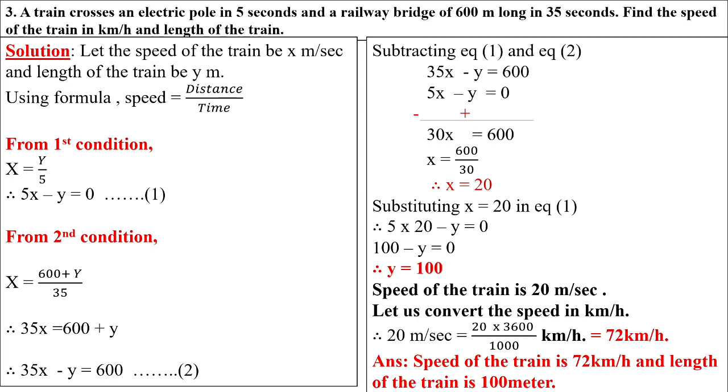We'll cancel the zeros: 36 into 2 gives 72 kilometers per hour. Therefore, the speed of the train is 72 kilometers per hour and the length of the train is 100 meters. I hope you have understood the sum.